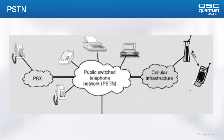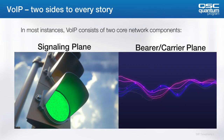Here we have a basic diagram of a telephone network and its various components. On the left you have your corporate network, which might include a PBX or similar device like a call manager. In the middle you have the PSTN, and then on the right you also have cellular networks. VoIP consists of two main components: the signaling plane and the bearer plane.